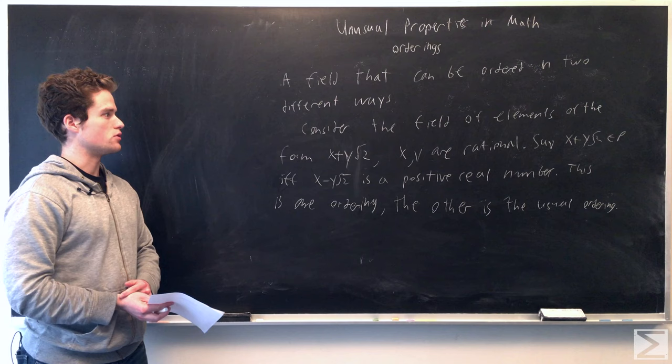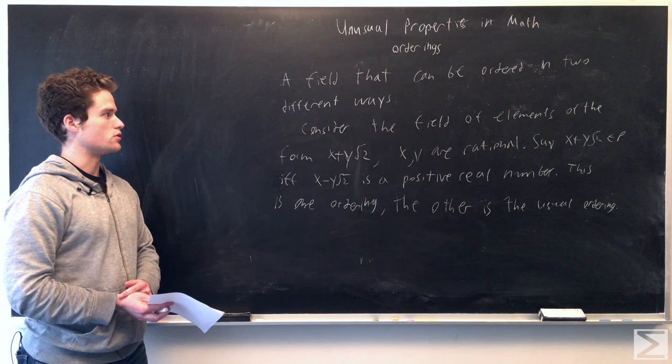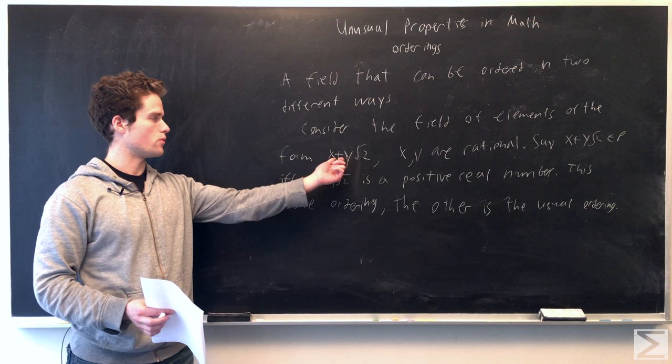We can give an example of a field that can be ordered in two separate ways. Consider the field of elements of the form x plus y root 2, where x and y are rational numbers.